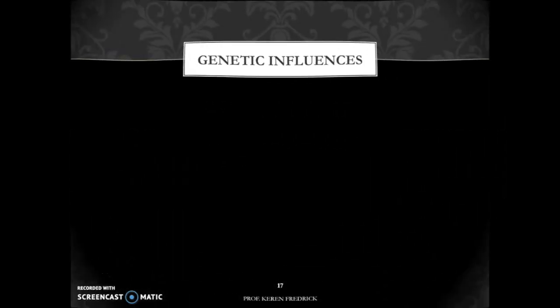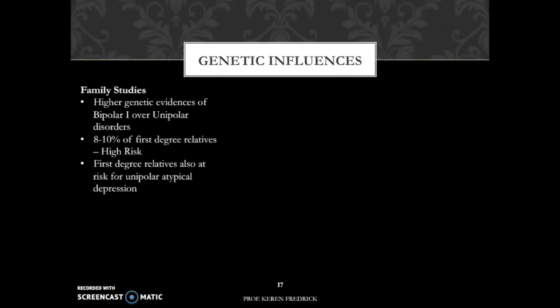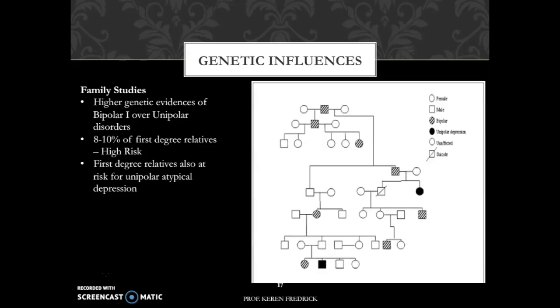The first thing we are going to consider is genetic influences, beginning with family studies. With regards to family studies, there are higher genetic evidences of bipolar one than unipolar disorders. With regards to genetic loading, 8 to 10 percent of first-degree relatives are expected to have this condition, whereas first-degree relatives are also at risk for unipolar depression of the atypical type, wherein there is excessive eating or sleeping.